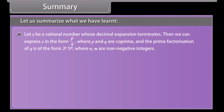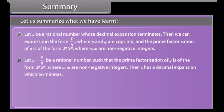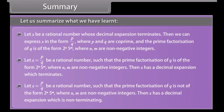Summary: Let x be a rational number whose decimal expansion terminates — then we can express x in the form p/q where p and q are co-prime and the prime factorization of q is of the form 2ⁿ × 5ᵐ, where n and m are non-negative integers. Conversely, if x = p/q and the prime factorization of q IS of this form, then x has a terminating decimal expansion. If the prime factorization of q is NOT of the form 2ⁿ × 5ᵐ, then x has a non-terminating repeating decimal expansion.